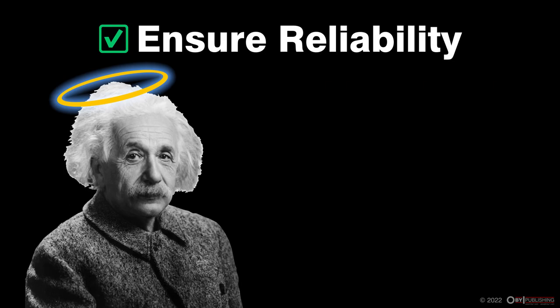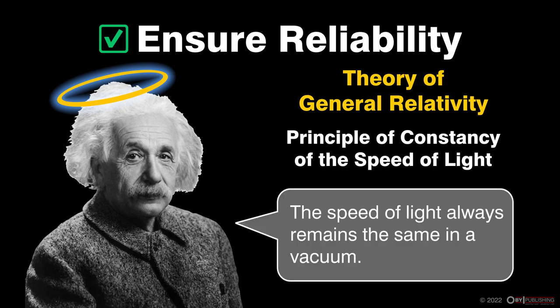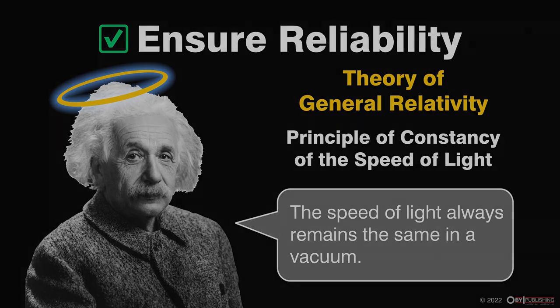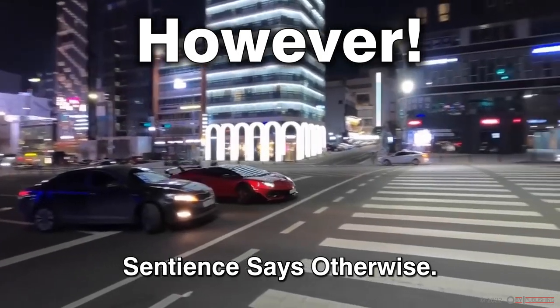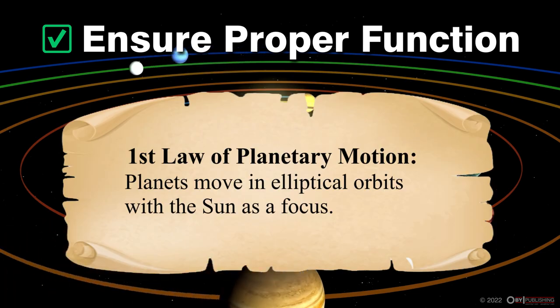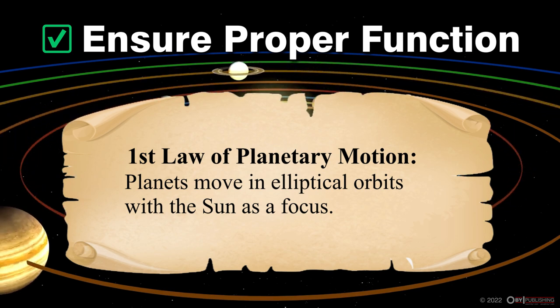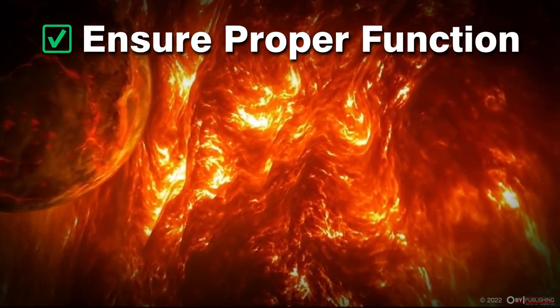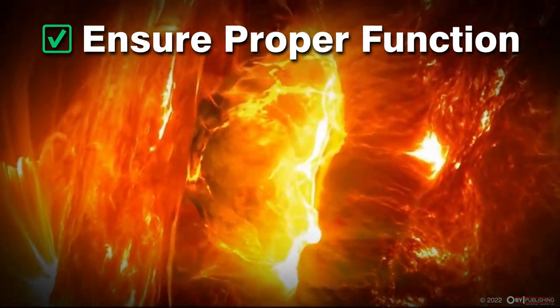Laws ensure reliability. One of the postulates in Einstein's theory of general relativity is the principle of constancy of the speed of light. This law states that the speed of light always remains the same in a vacuum, giving us a reliable constant for evaluating the speed of other objects. However, in the world of sentience, many Lamborghini owners might not feel so compelled to abide by a 65 mph speed limit. Laws ensure proper function. Kepler's First Law of Planetary Motion states that planets move in elliptical orbits with the sun as a focus, demonstrating repeatability and reliability, and ensuring that planets don't randomly crash into the stars they orbit.